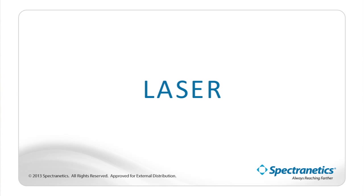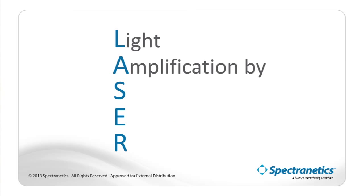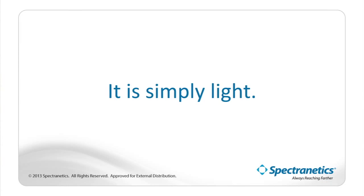Laser is a form of light energy which has been used for many years to do many things. There are many different kinds of lasers, but let's talk about what lasers are. Laser is an acronym standing for Light Amplification by Stimulated Emission of Radiation. A laser is light — it's not alpha, it's not beta, it's not gamma, it's not x-ray. It is simply light.